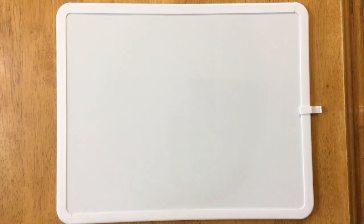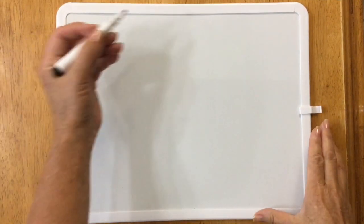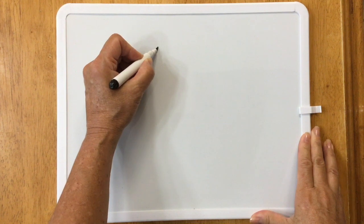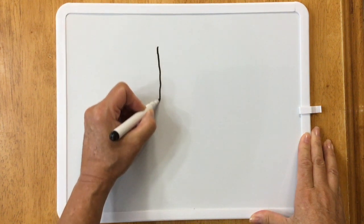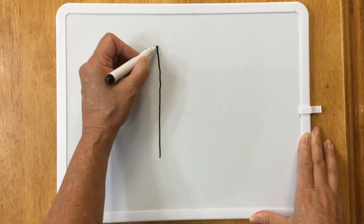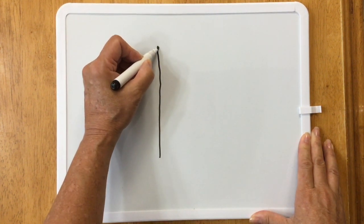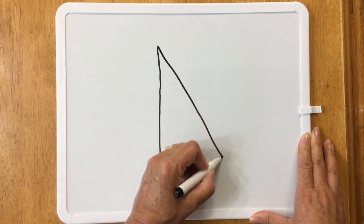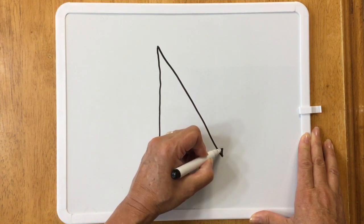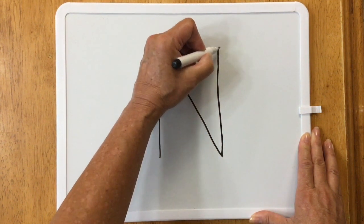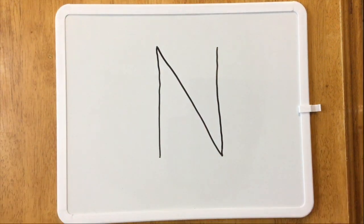Let's begin with the uppercase letter N. To draw an uppercase letter N, you start at the top, draw a straight line down. Go back to the top and slant a line down. Then you finish up with a straight line going up. Good work!